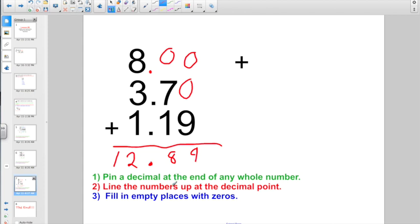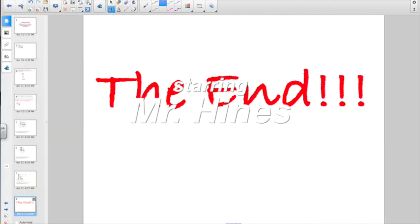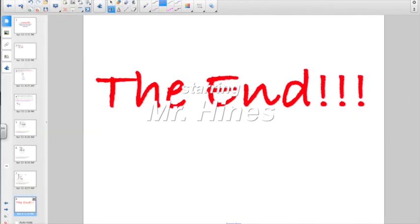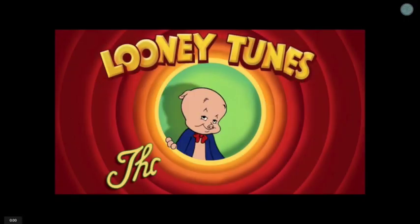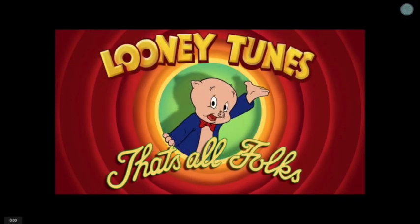If you can remember the 3 steps: pin a decimal at the end of any whole number, line the numbers up at the decimal point, and fill in empty places with 0's. So that, my friends, is the end. You're definitely going to want a scratch piece of paper for the Socrative quiz, and good luck. That's all, folks.